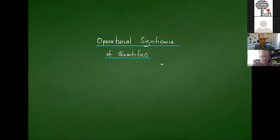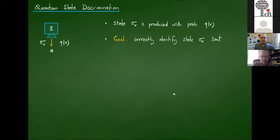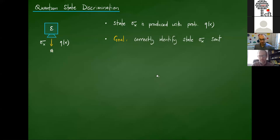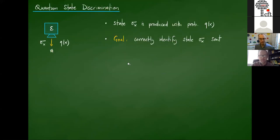This leads into the operational significance of these quantifiers. I'm going to introduce two tasks — one task for each quantifier. I'll start with a task that is very well studied in quantum information theory: quantum state discrimination.